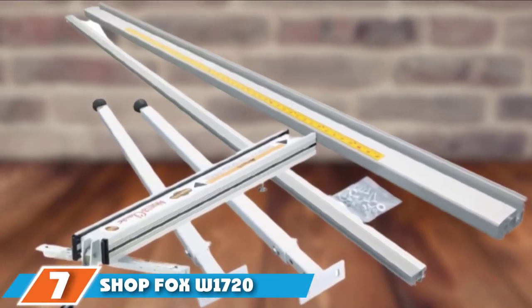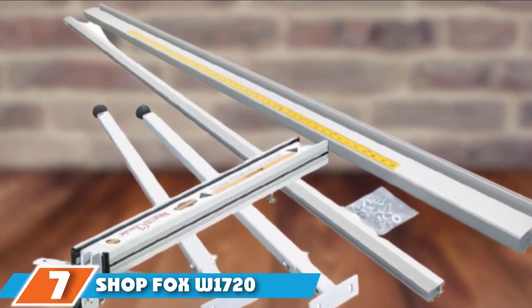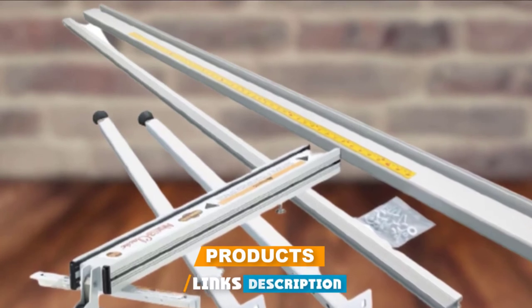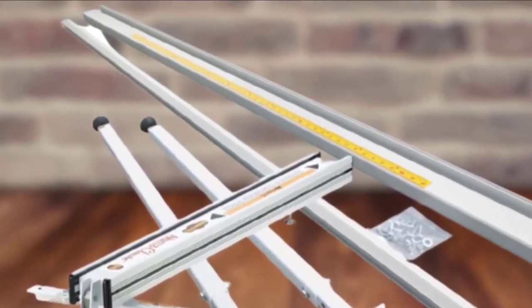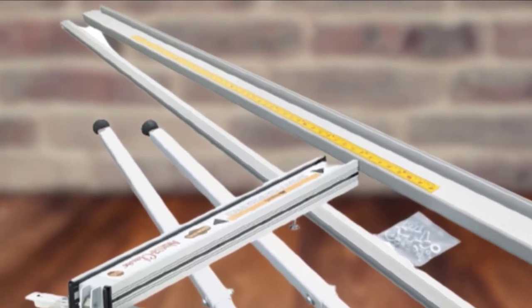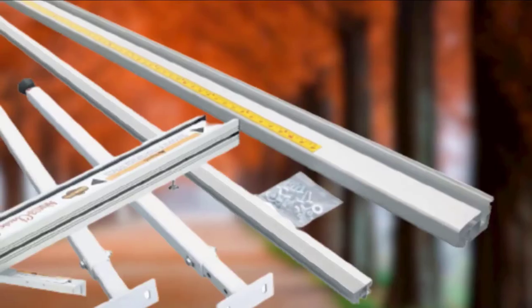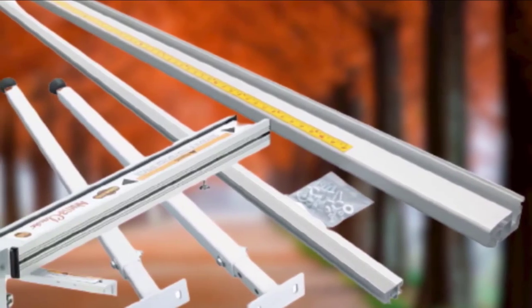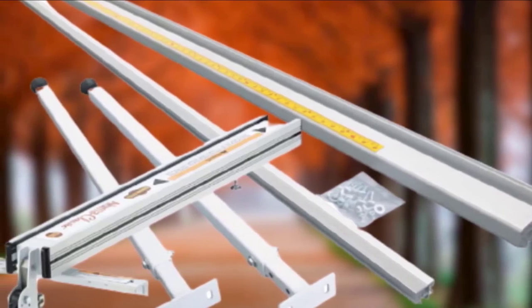Moving on to the next, at number seven we have Shop Fox W1720 Aluma-Classic fence. Shop Fox W1720 Aluma-Classic fence includes 50 inches of rip capacity to the right side of the blade and includes 79 inches long railing system. The best part about this model is you won't have to pay a big amount to purchase it. Luckily, the rails are backed by additional leg stance.